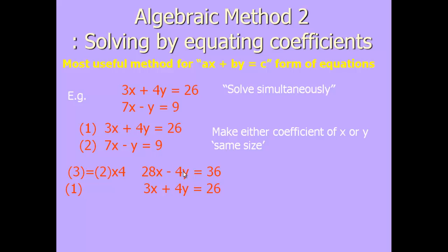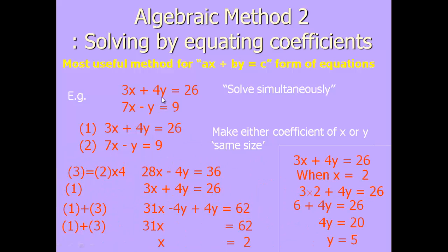If we multiply the second one by 4, we now have the same number of y. One's plus and one's minus. But that doesn't matter because if we add the two together, then the y's will disappear. They will cancel each other out. Minus 4y plus 4y is 0, isn't it? So we add the two equations together. We get 31x. We get 0 from the y's equal to 62. If we then divide 62 by 31, we find out x is 2. And we can then put the x value into either of the equations. We'll use this one. And it gives us y equals 5. So we get 2, 5 as our solution.